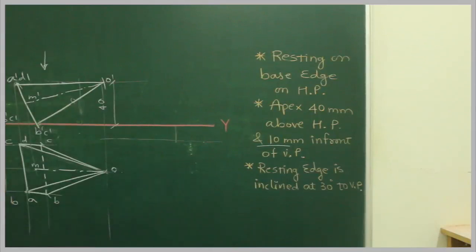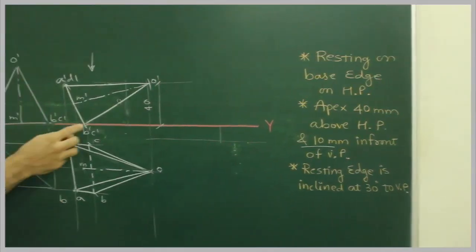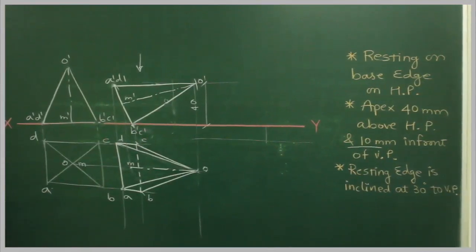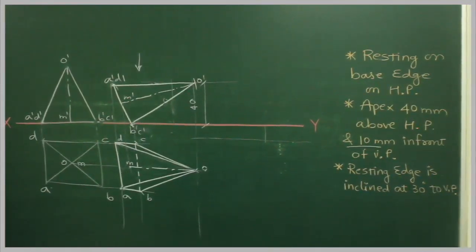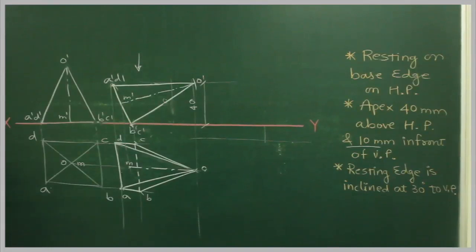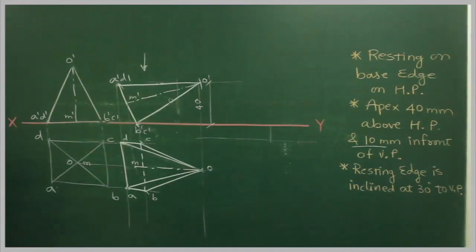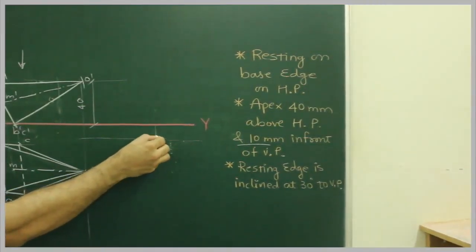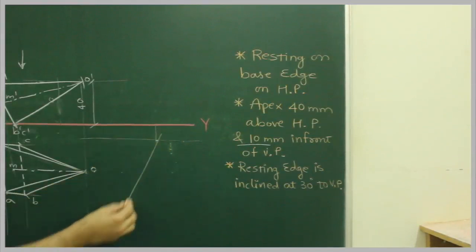Now, resting edge, which is the resting edge? B dash C dash, the one which is the XYN, is the resting edge. So the resting edge is inclined at 30 degrees to VP. So we have two conditions to satisfy in the last stage. So here also, what we will do, instead of taking 30 degrees, we will take down, we will take 10 down from X on N, and we will take 60 degrees.